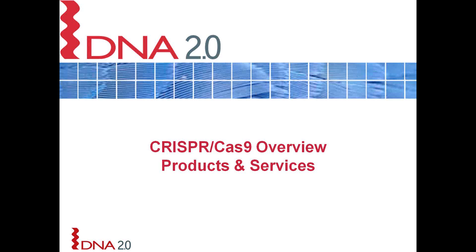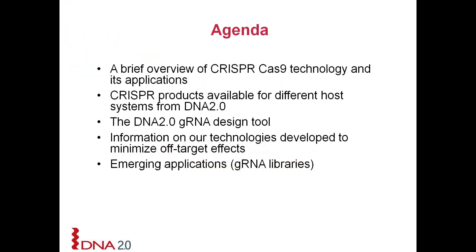Hi, this is Kayden Kadar from DNA 2.0. We are two scientists at DNA 2.0 that help develop the current products and services we offer for CRISPR-Cas9 technology. In this brief 10-minute overview, we'll provide an overview of CRISPR-Cas9 technology and its applications, the CRISPR products and services currently available for different co-systems, an overview of our DNA 2.0 guide RNA design tool, and information on our technologies developed to minimize off-target effects. At the end, we'll go over a new emerging application called guide RNA libraries.